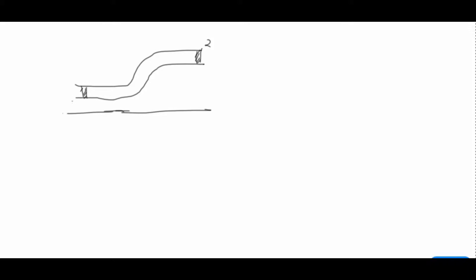We have one inlet section, section 1, and one outlet section, section 2, through which liquid is flowing. We are considering the pressure, velocity, and height at section 1 as P1, V1, and h1, and at section 2 as P2, V2, and h2. We are not going for the formula derivation; we are going for the direct basic theorem and its formula.